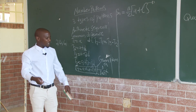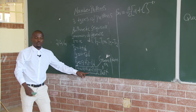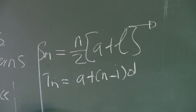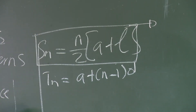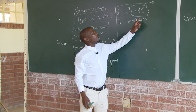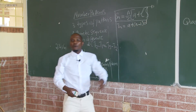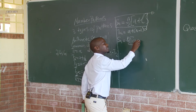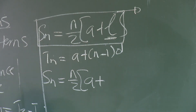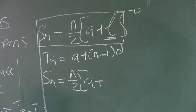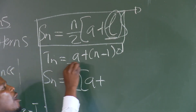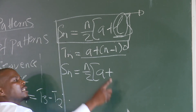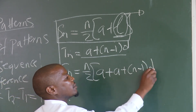But remember, the last term is TN. TN is equal to A plus (N minus 1) times d. The formula for the sum is N over 2 into A plus the last term, where the last term TN equals A plus (N minus 1) times d.